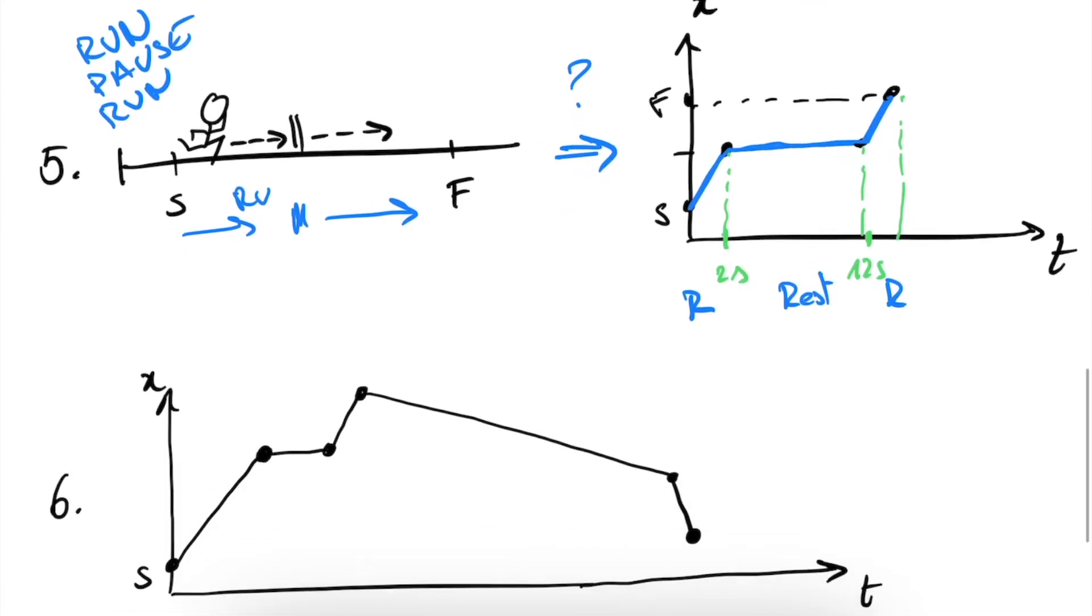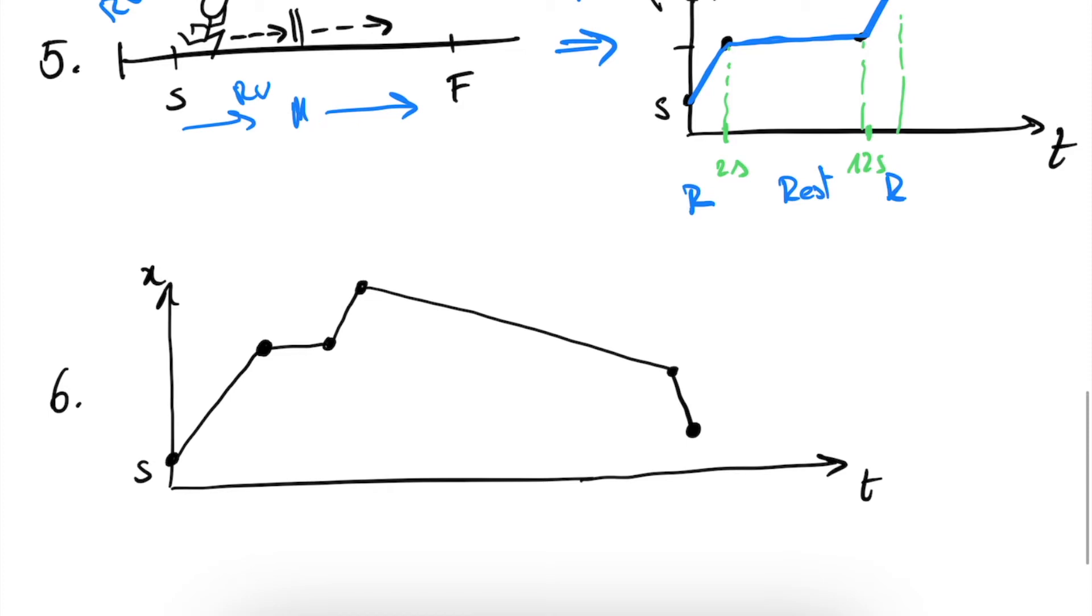As a final exercise, we're going to go the other way around. We're going to start from an XT diagram and we're going to try to explain what really happens. I've drawn an XT diagram here and we're going to explain what happens. So again, we see we start from S, from our starting point. What happens then is that we have this slope here, and it's quite steep. So we can say that, well, basically we are running here up until this point in time we're running.